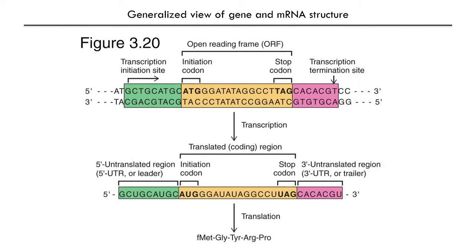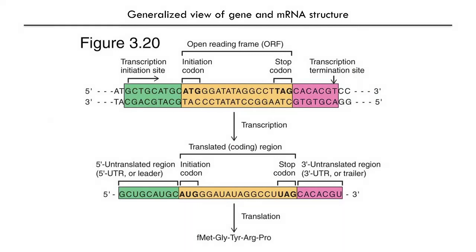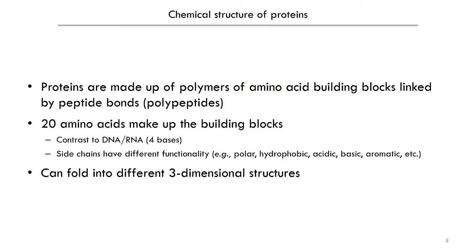The protein sequence is polymerized from the mRNA template in the coding region by ribosomes through translation, a process we will discuss in later lectures. The sequence of amino acids translated is determined by base triplets called codons. Amino acids are the building blocks of proteins. There are 20 amino acid building blocks found in proteins, in contrast to the four bases found in DNA and RNA. Consequently, we need multiple bases to encode an amino acid.